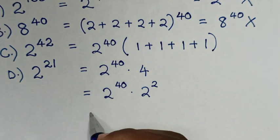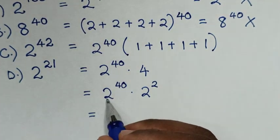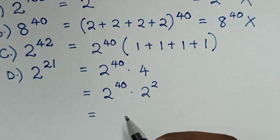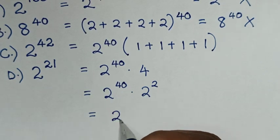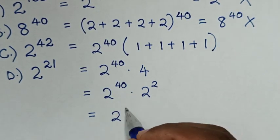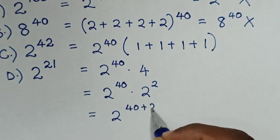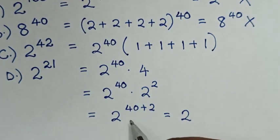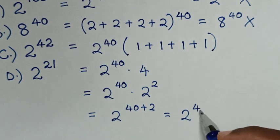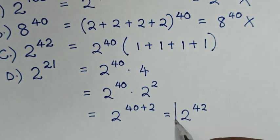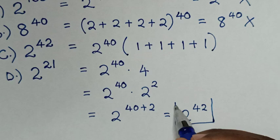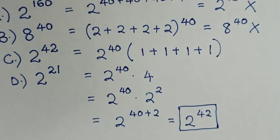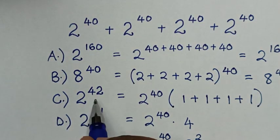Then in the next step, it will be equal to — in here is multiplication of exponents with same base but different powers. So it will be same base of 2, then power of 40 plus power of 2, which equals 2 power of 42. So this is the correct way to do this problem. The answer is 2 power of 42, which is C.